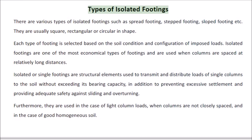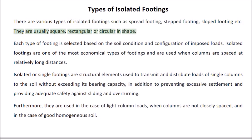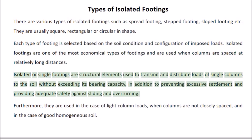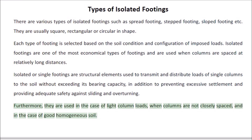Types of isolated footings include spread footing, stepped footing, sloped footing, etc. They are usually square, rectangular, or circular in shape. Each type is selected based on soil condition and configuration of imposed loads. They are used to prevent excessive settlement and provide adequate safety against sliding and overturning. They are used in the case of light column loads, when columns are not closely spaced, and in the case of good homogeneous soil.